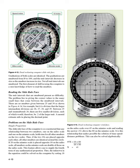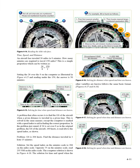This can also be solved algebraically: 45x = 18 × 80, x = (18 × 80) / 45. Time, speed, and distance: an aircraft has traveled 24 miles in 8 minutes. How many minutes are required to travel 150 miles? Setting 24 over 8 on the computer and reading under 150, the answer is 50 minutes. To find the GS when a given distance is traveled in a given time, set the speed index to the appropriate values.